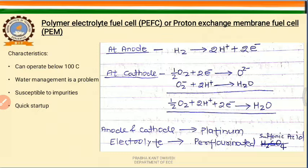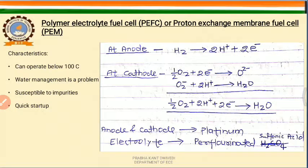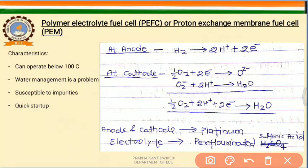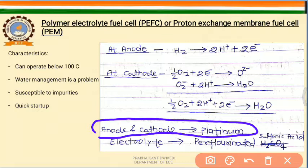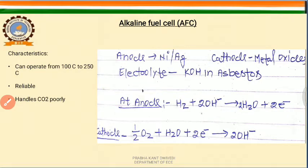This cell starts quickly — very quickly after supplying the fuel it generates electricity to the external circuit. The next type is the Alkaline Fuel Cell. In the alkaline fuel cell, the anode is made up of nickel or silver, whereas the cathode may be any metal oxide. The electrolyte used in the alkaline fuel cell is Potassium Hydroxide (KOH). The cathode and anode of this cell can be expensive as they may be made of platinum.